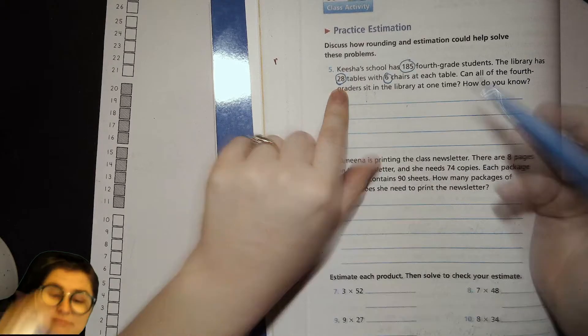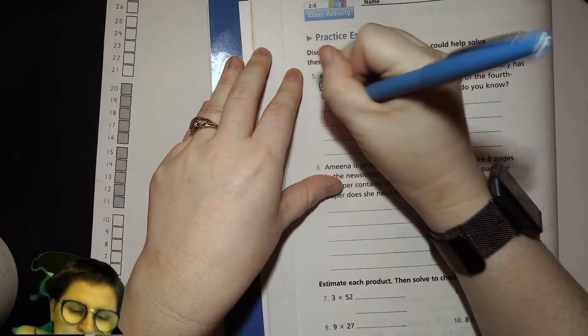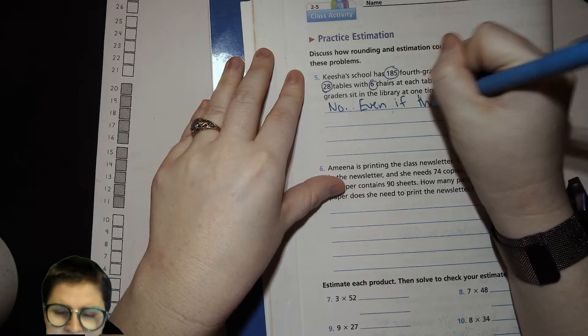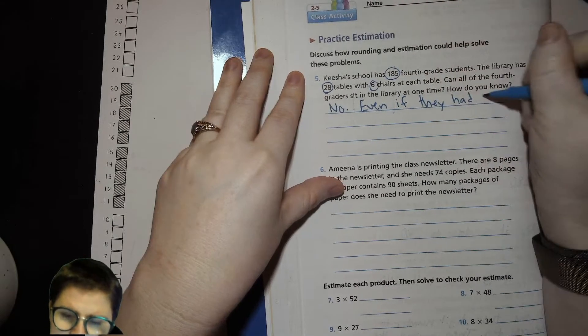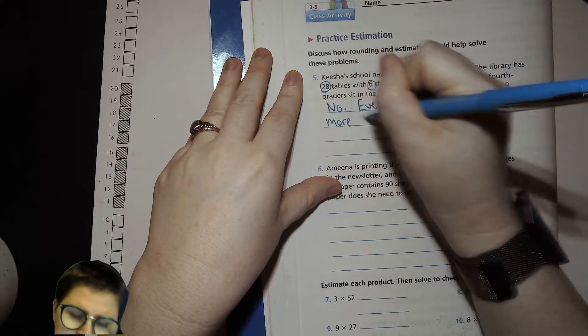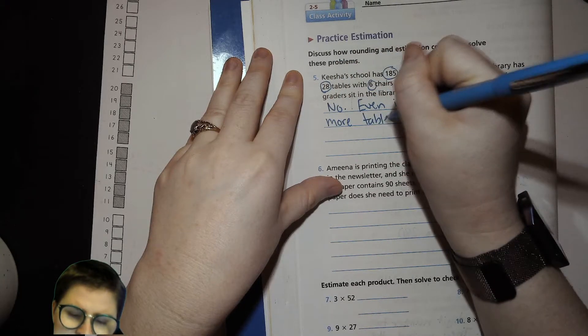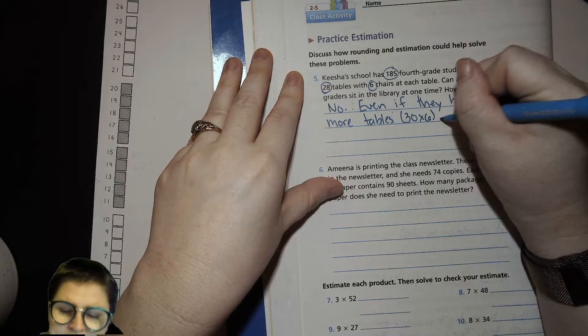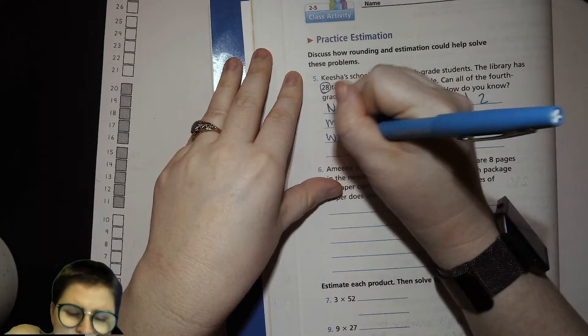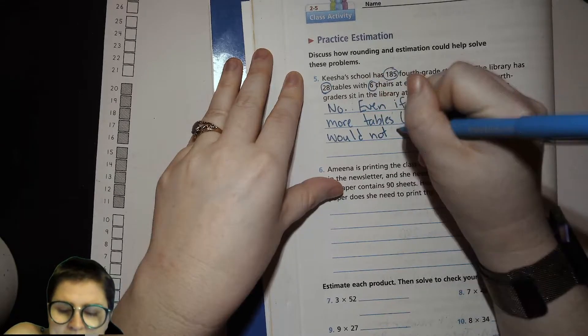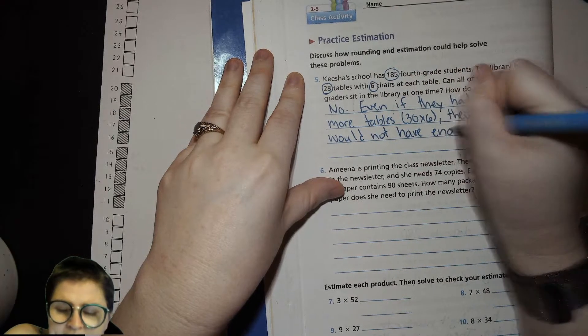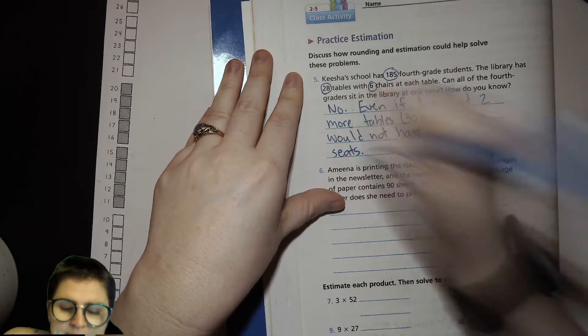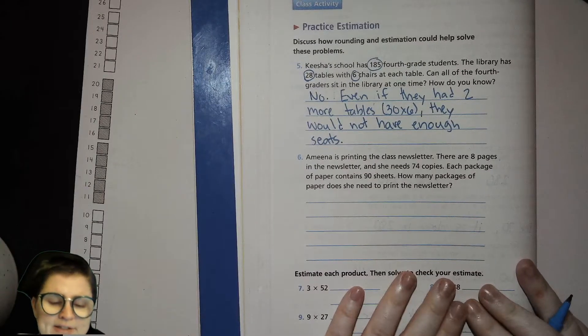So let's write that down. No, even if they had two more tables, put in parentheses, that would be 30 times six, they would not have enough seats. Okay, let's look at this next one.